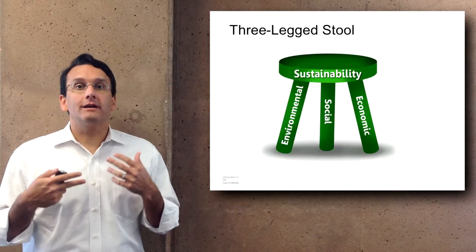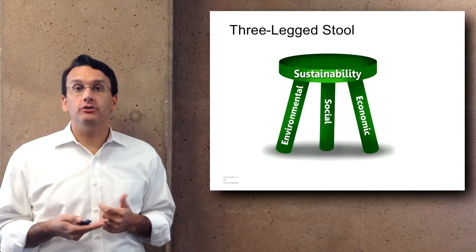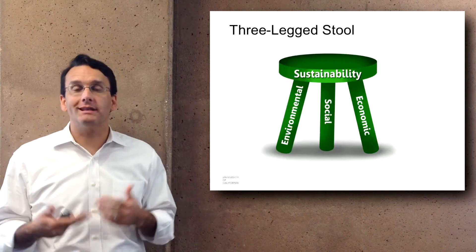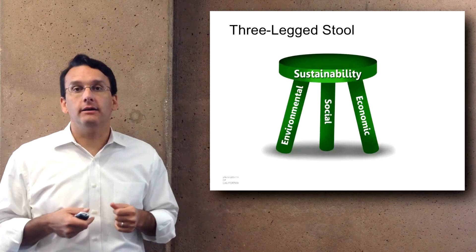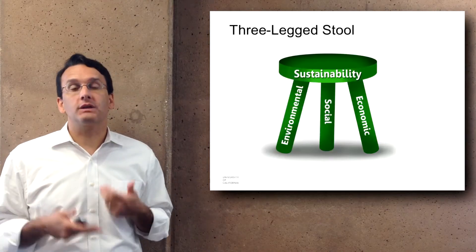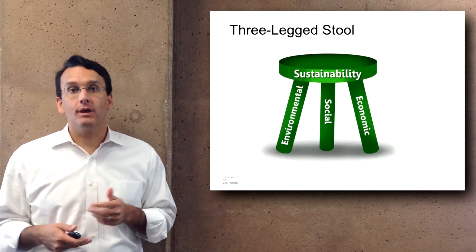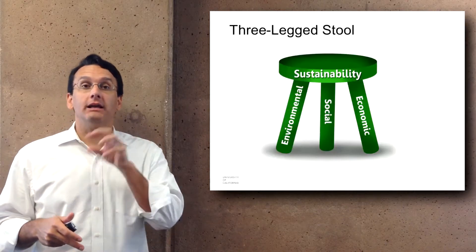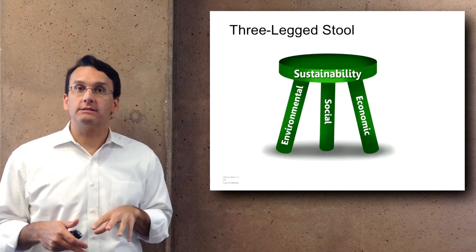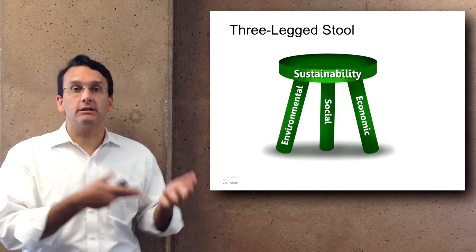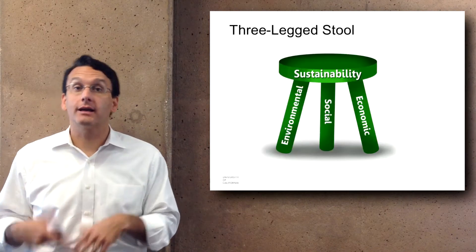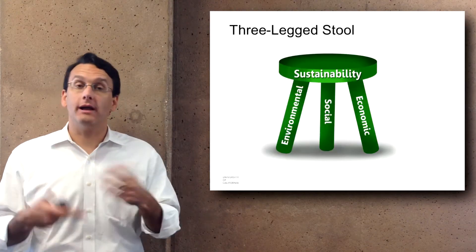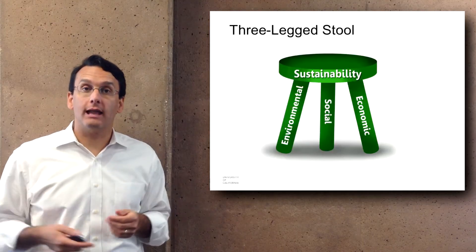One way of conceiving sustainability that's often used is the model of a three-legged stool, where there are three major categories: environmental, social, and economic. Various people propose that sustainability can only work if all three aspects are attended to — if you just focus on environmental and social without economic, the system won't work, and similarly, if you focus on any two or just one without all three, the system will collapse.